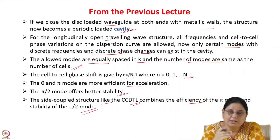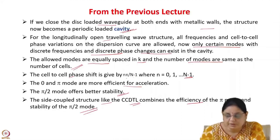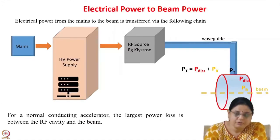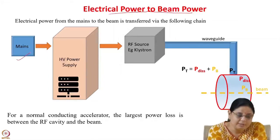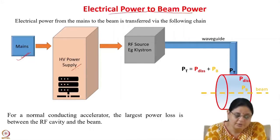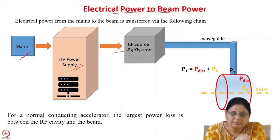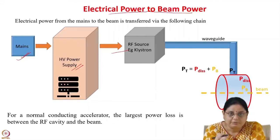Superconductivity happens at very low temperatures, so you have to go to cryogenic temperatures. Let us see what are the advantages of going superconducting. If you see the electrical power to beam power transfer — starting from the mains, the mains gives power to the high voltage power supply, which in turn powers the RF source, which could be a klystron, a solid state amplifier, or a tetrode.